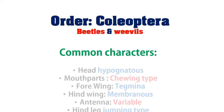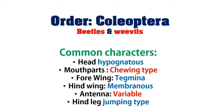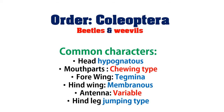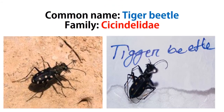The common characters of Coleoptera are: head hypognathous, mouthparts chewing type, forewings tegmina, hind wing membranous, antenna variable type, and hind leg cursorial type.